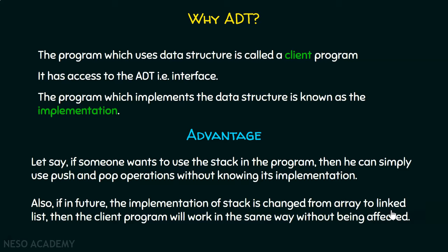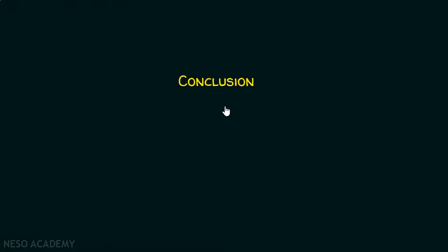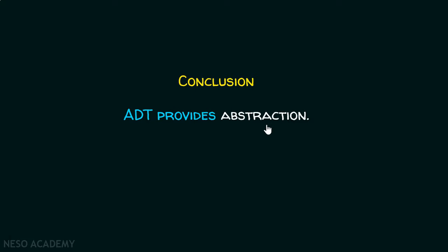This is one of the biggest advantages of using abstract data types. With ADTs, we are separating two worlds — providing the user an interface while the implementation is handled in the backend. The user doesn't have to worry about it, and the implementation can change without affecting the client program. Abstract data type provides abstraction, meaning hiding details from the user, and this is very important because the user just needs to use the functionality, not worry about how it is implemented. That is why the need for abstract data types arose.